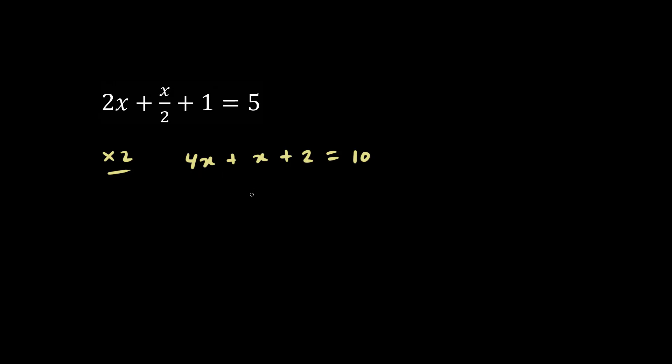What is 4x plus x? We have 5x, and we have 10 minus 2 is 8. We divide both sides by 5, and we have the answer, 8 over 5.